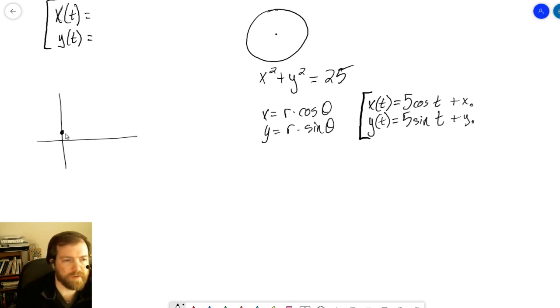All right, well, that also tells you the initial height is going to be a thing. So we need y of t is going to be based on y0, eventually.